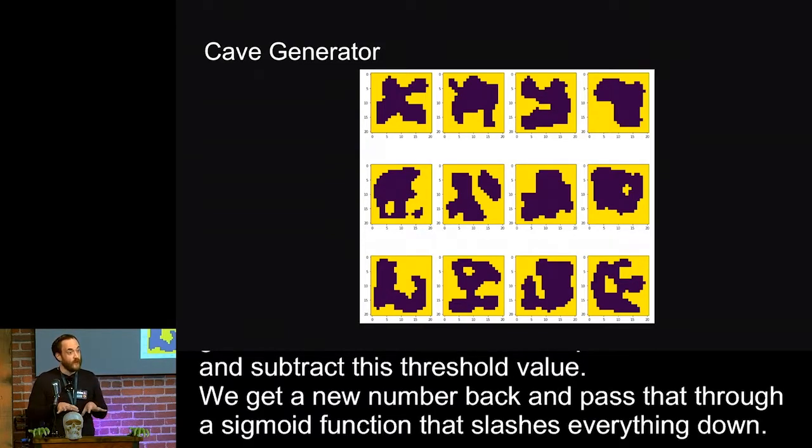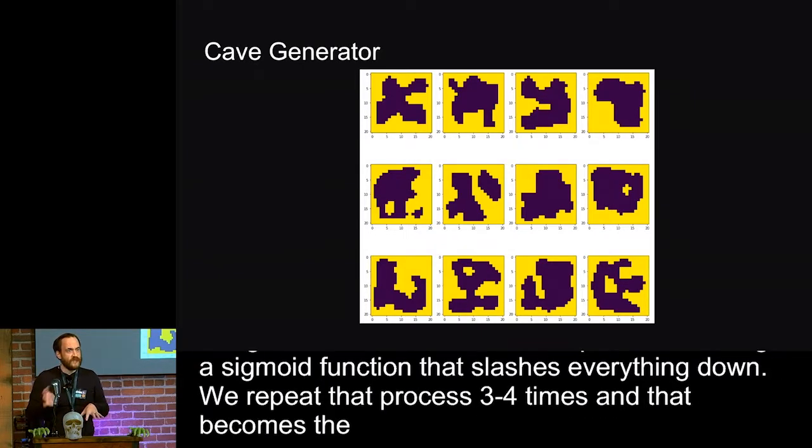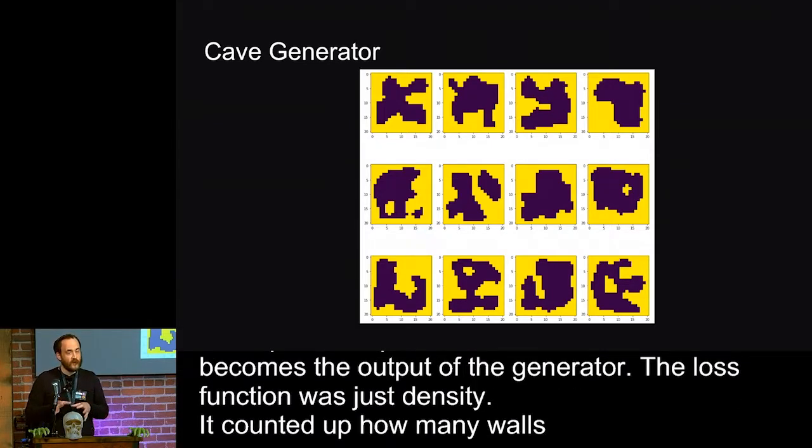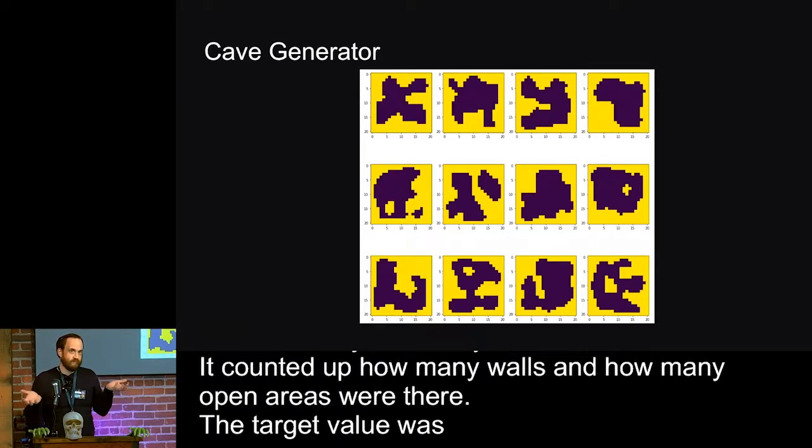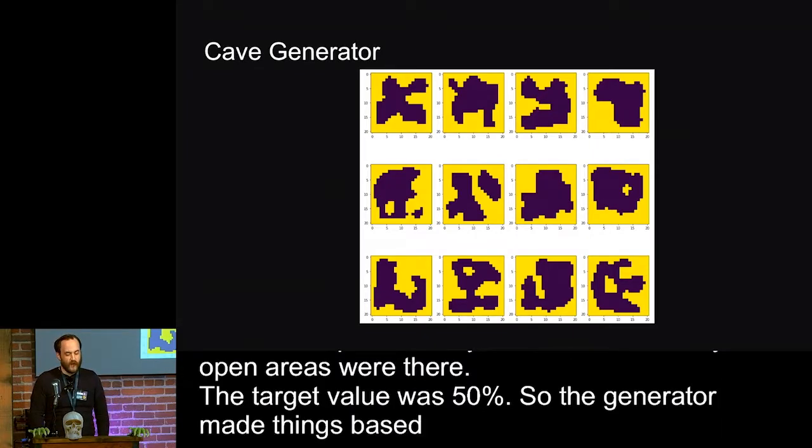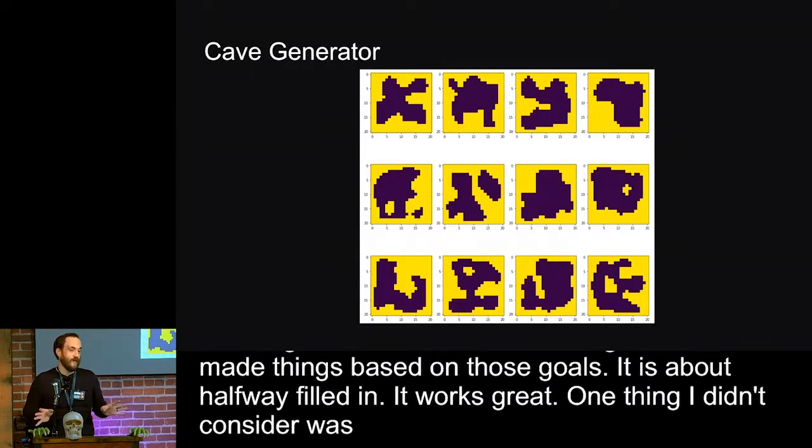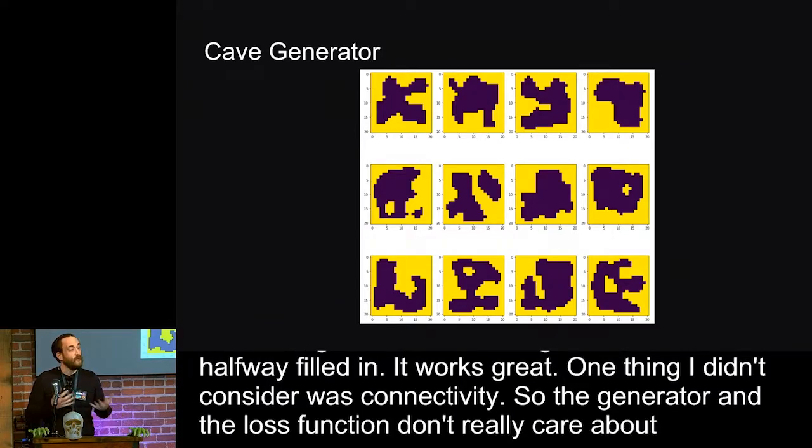And that becomes the output of the generator. The loss function that I used here was just density. It just counted up how many walls and how many open areas were there. And the target value was 50%. And so the generator made things based on those goals. It's about halfway filled in, and it works great. One thing that I didn't consider was connectivity. So the generator and the loss function don't really care about that at all. And you'll see some examples that aren't fully connected there.